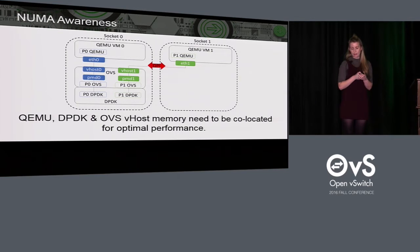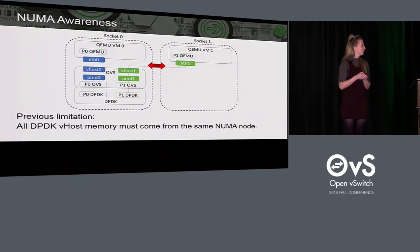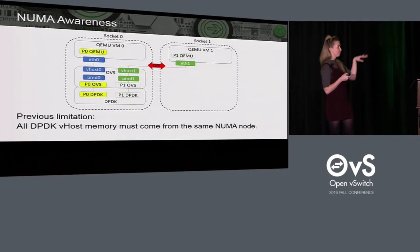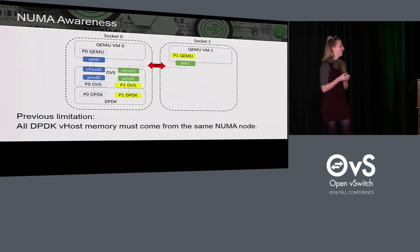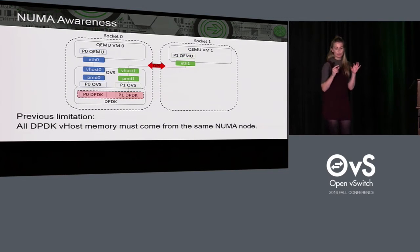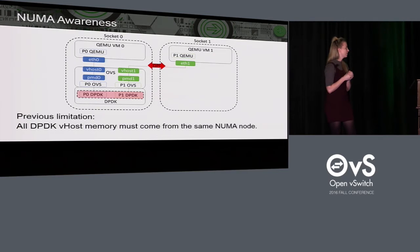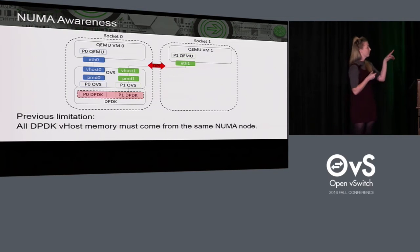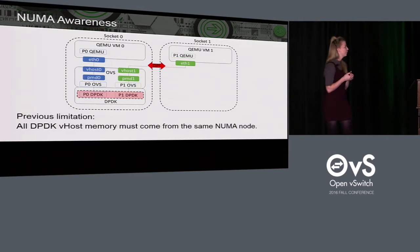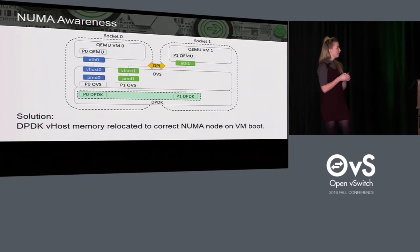There are three types of memory associated with each port: QEMU memory, OVS memory, and DPDK memory. The first port has all its memory on the same socket in the optimal configuration. But the second port has its memory split between two sockets. Prior to the NUMA-aware feature, DPDK had a limitation whereby all vhost memory allocated by DPDK had to come from the same socket, even if you had VMs on different sockets. That introduced a performance issue because for every packet you send and receive, you're going across the link between the two nodes, which could quickly become a bottleneck. In DPDK 16.4, this limitation was removed, and you can see that the DPDK memory has moved to the correct socket.